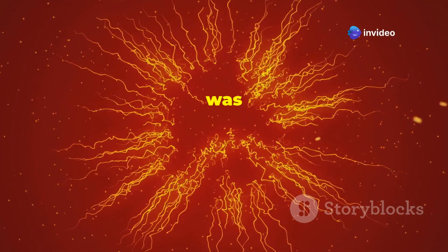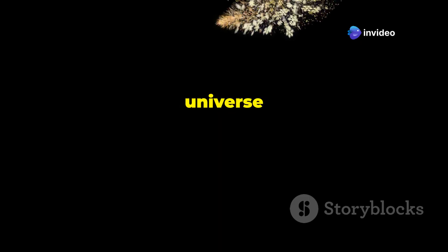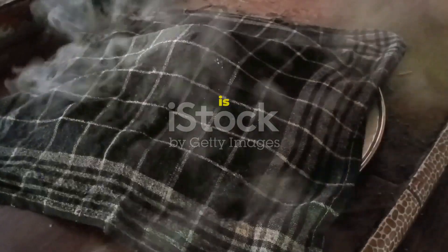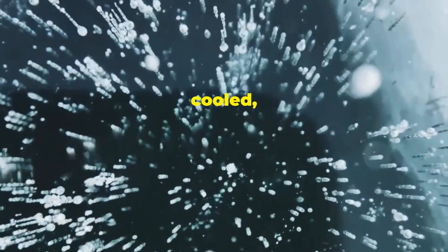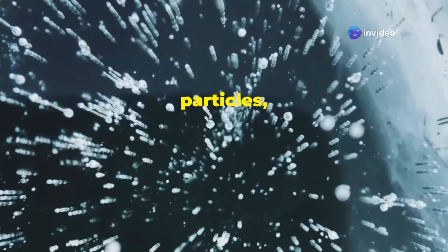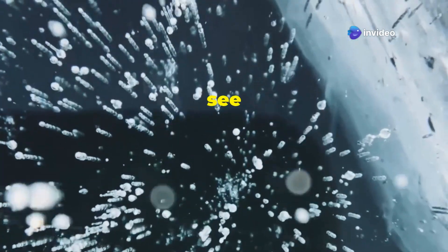Everything was pure energy. As the universe expanded and cooled, this energy began to transform into matter. This transformation is like water vapor condensing into droplets. As the universe cooled, energy condensed into tiny particles, the building blocks of everything we see around us.